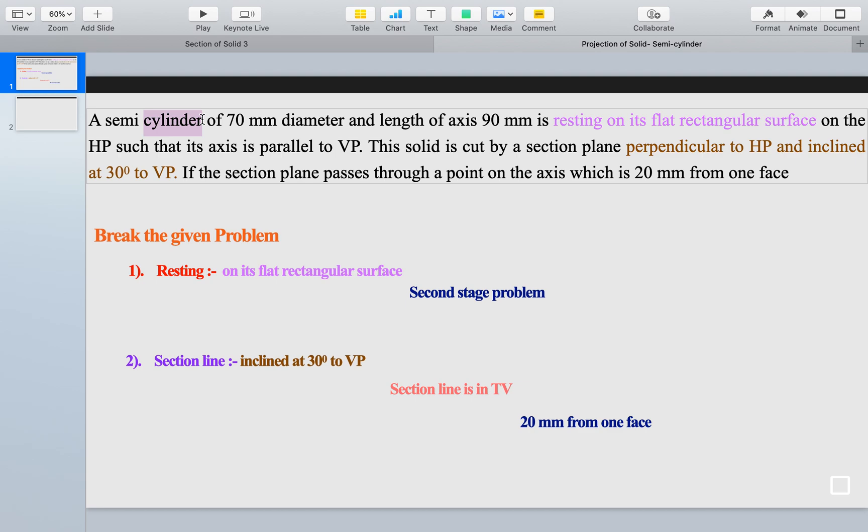So if you read this part, you will realize whether this is a first stage problem or a second stage. Now to keep a semi-cylinder on a rectangular surface, we are required to draw the second stage. It is not possible to put a semi-cylinder on a rectangular surface in the first stage.